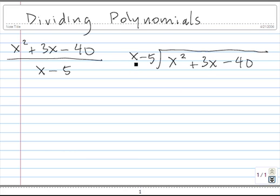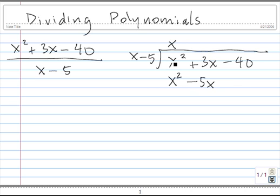The very first thing we do is look at the leading term here of x, and we want to make it go into the leading term here of x squared. The question we ask is: what times x gives us x squared? The answer is x, so we put an x on the top. Next, we take this x and multiply it by x minus 5. x times x is x squared; x times negative 5 is negative 5x, so we put minus 5x and line our terms up. After we multiply, we subtract the entire quantity x squared minus 5x from x squared plus 3x. x squared minus x squared is 0, and 3x minus negative 5x is equal to 8x, so we put that 8x right here.